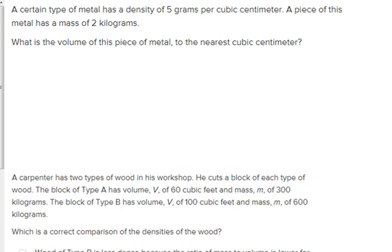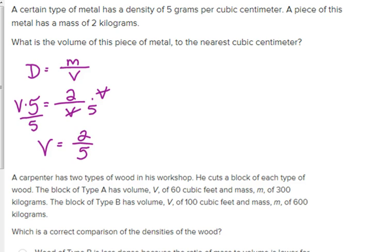Alright, so you get another example. A certain type of metal has a density of 5 grams per cubic centimeter. A piece of this metal has a mass of 2 kilograms. What is the volume of this piece of metal to the nearest cubic centimeter? So, same formula, density equals mass divided by volume. They give us a density of 5 grams. They give us a mass of 2 kilograms. And they want to know what's the volume. Okay? What do we do to solve that? We multiply by V, and then we divide by 5. So the volume is 2 over 5. They want it to the nearest cubic centimeters. 2 over 5 is 0.4. So, they want us to round to zero? How do we do that when we do that?